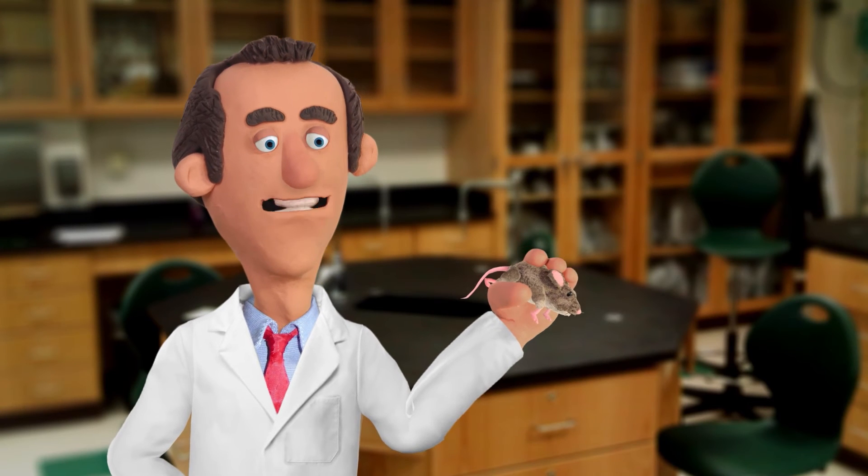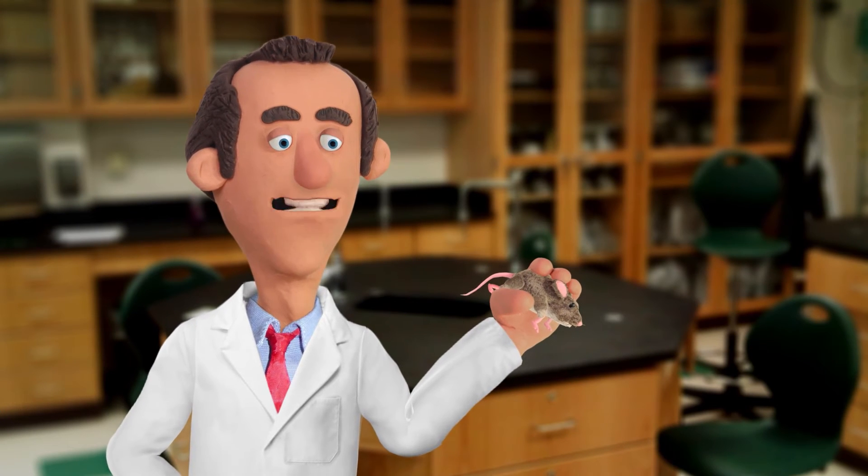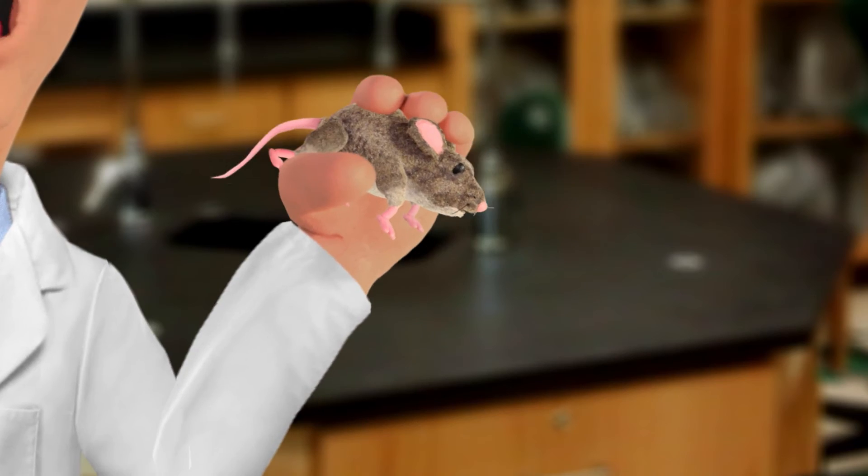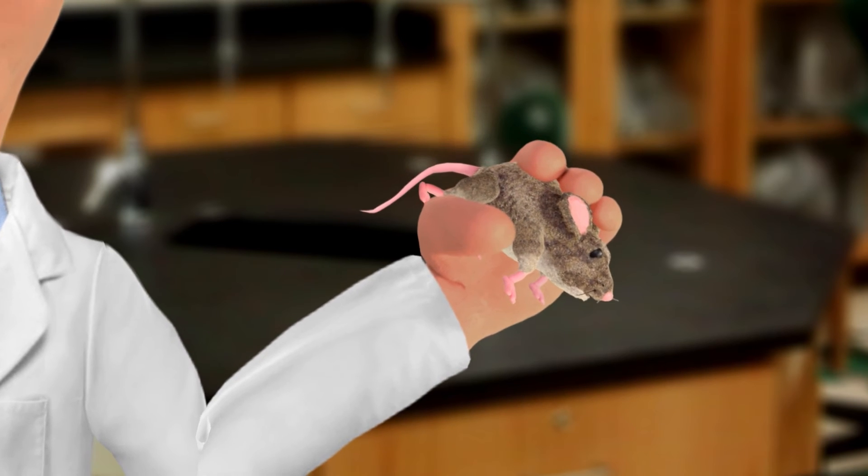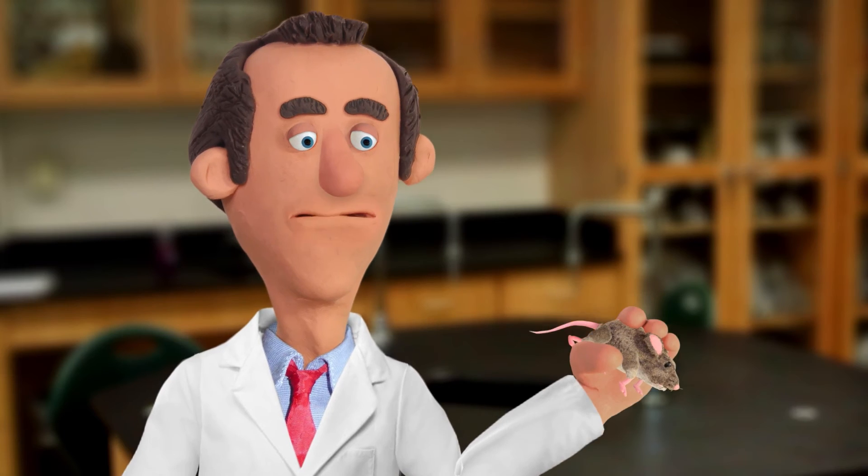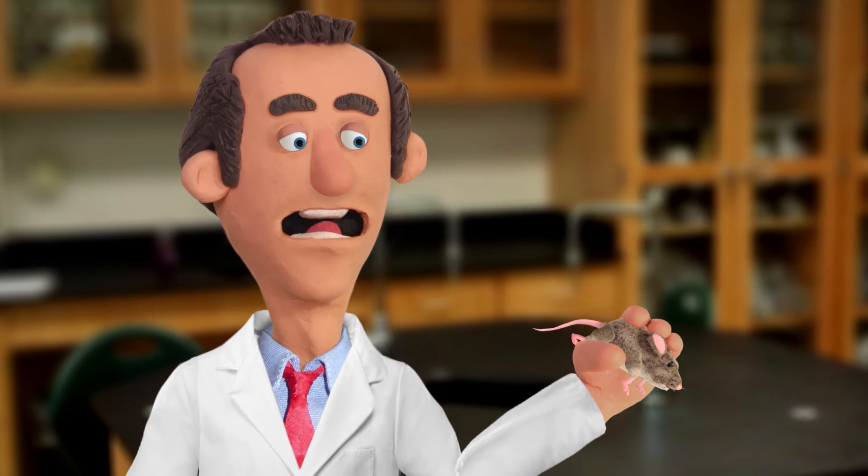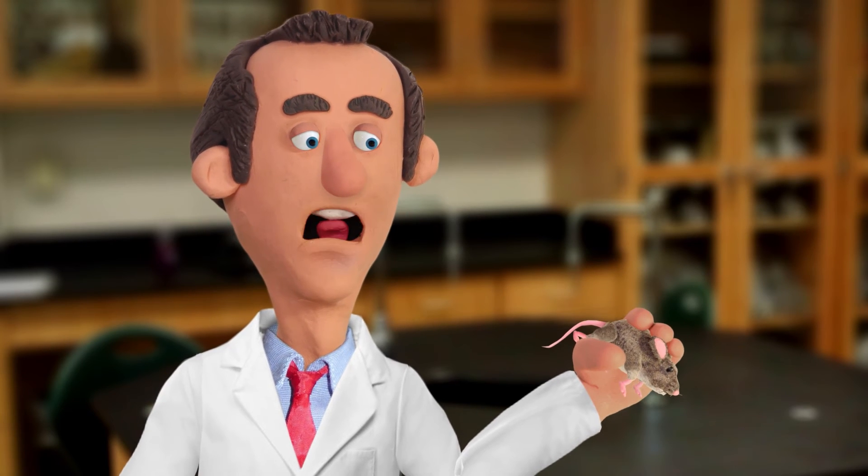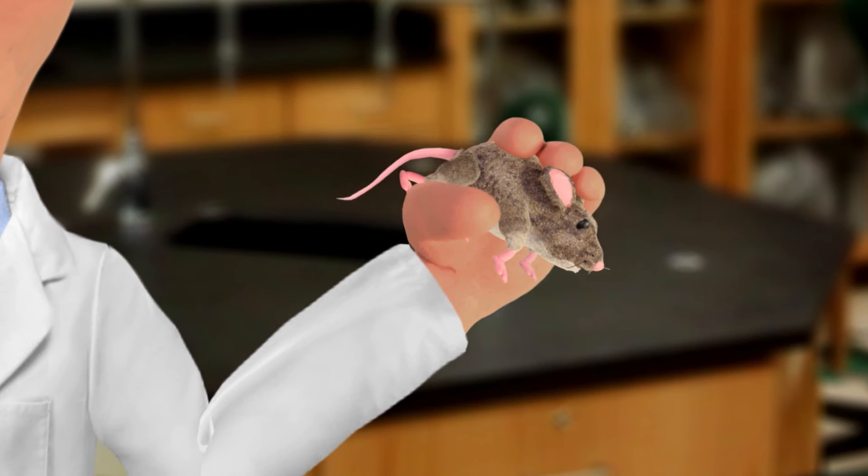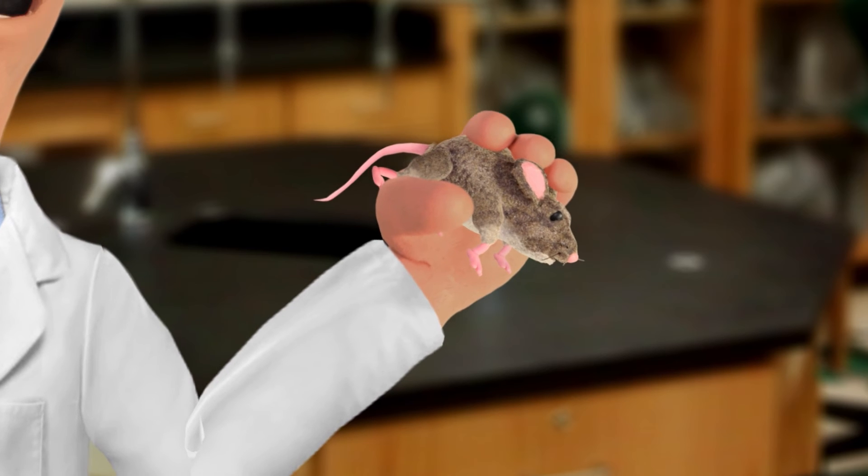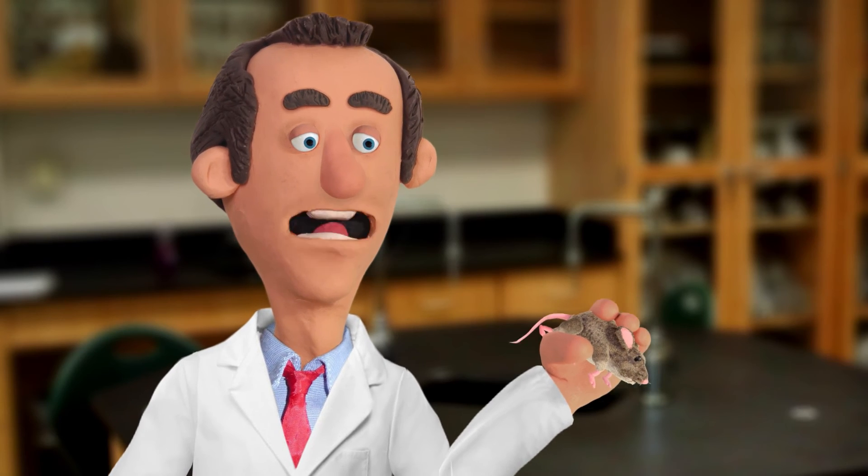The experiments yielded some rather fascinating results. It turns out that while the length of an average mouse, from nose to tail, is eight and a half regular, or clear centimeters, that same mouse would be ninety-seven purple centimeters long.